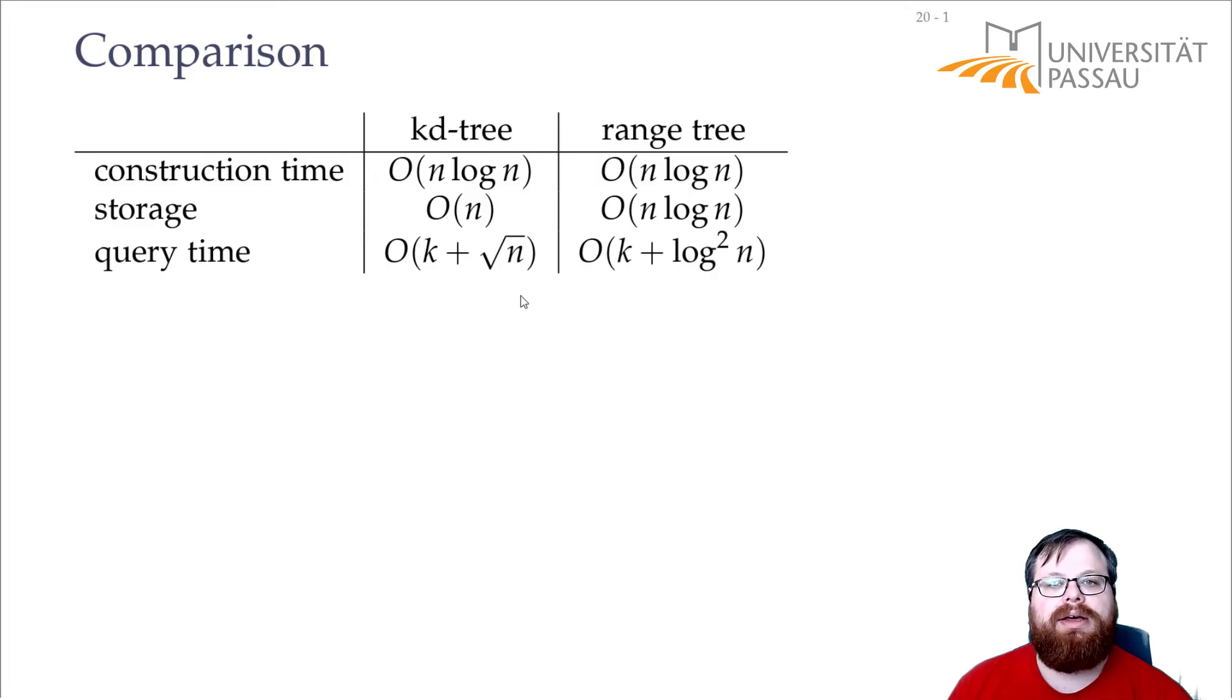At least as long as the k does not get too large. If k is order of n, then this doesn't matter. So kd tree less storage, range tree less query time. So the range trees are better when you know that you only have very small queries. When you know that your queries will be big, then this doesn't matter here, and then you should use the kd trees. So here we have a trade-off between the space and the query time.